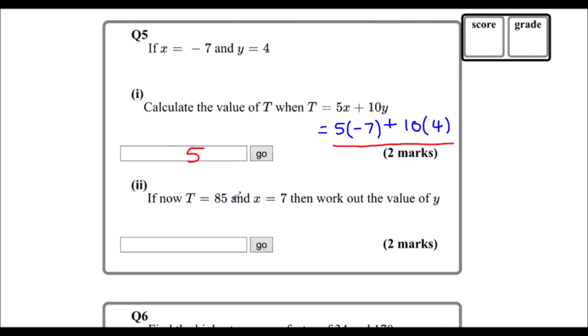If t equals 85 and x is 7, what's y? If t is 85 and x is 7, changing x into 7, what is y? I'm going to do 5 times 7 first, and that's 35. So I've got 85 equals 35 plus 10y. And I'm going to find out y, so I'm going to get y by itself. At the moment, I've got plus 35. I'm going to subtract 35 from both sides, which leaves me with 50 equals 10y. To get y by itself, I'm going to divide both sides by 10, which leaves me with y equals 5.